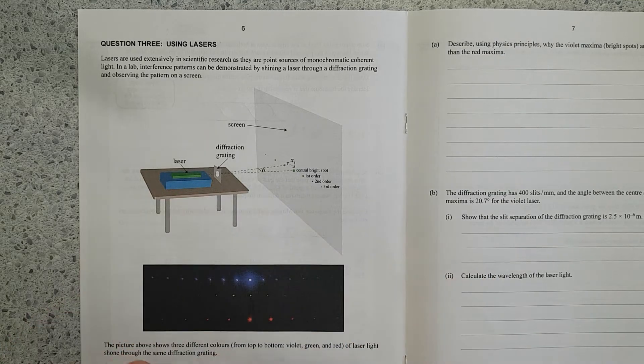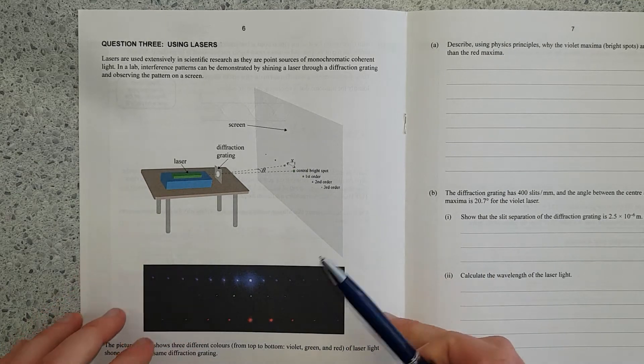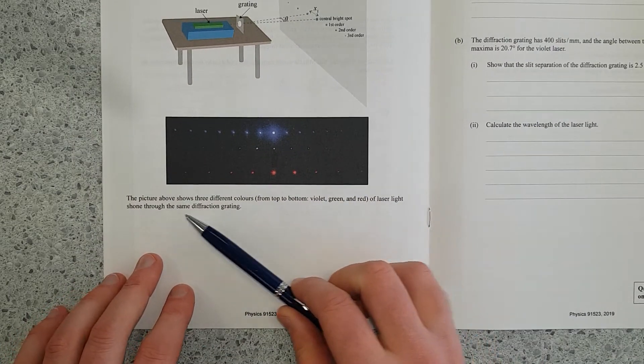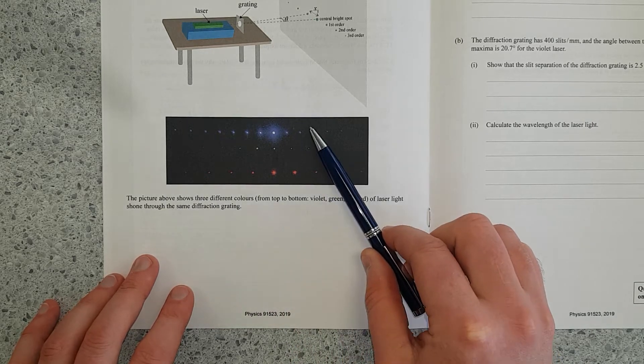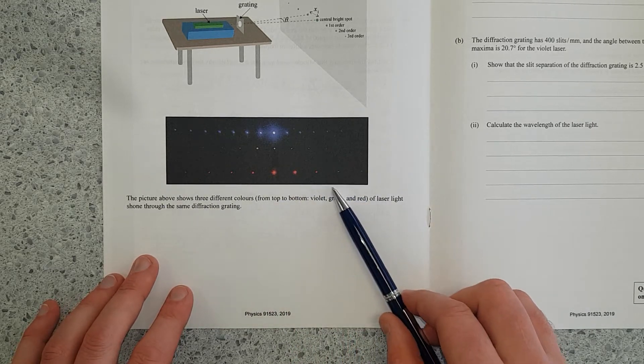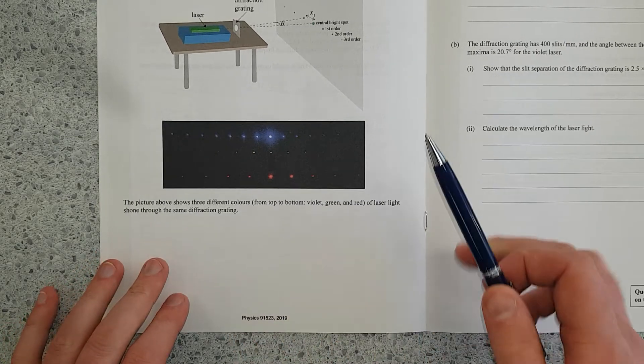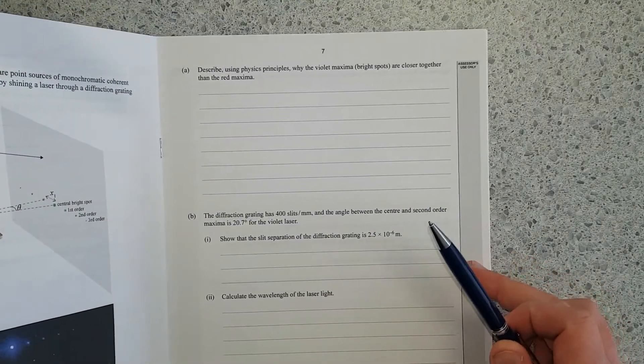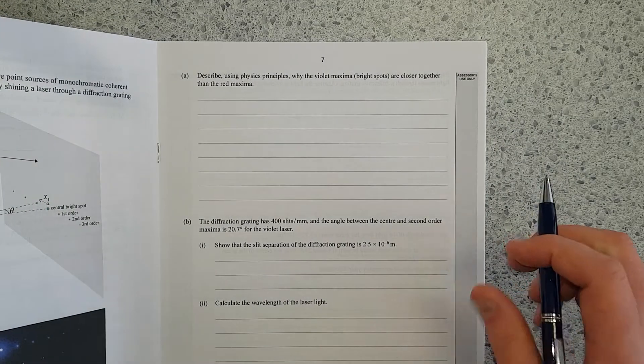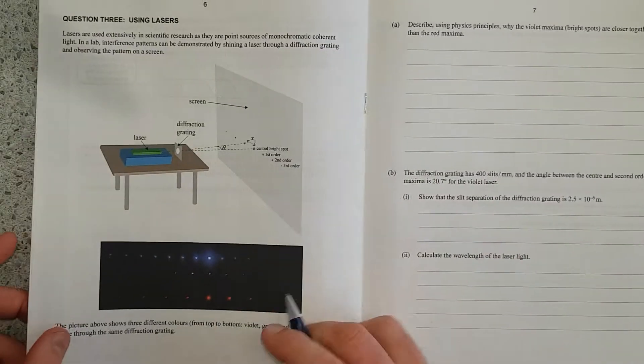We've got central bright maximum, first order, second order, third order, and so on. The picture above shows three different colors from top to bottom: violet at the top, green, and then red. For those of you that are color blind, laser light shone through the same diffraction grading. Describe using physics principles why violet maxima, these ones here,